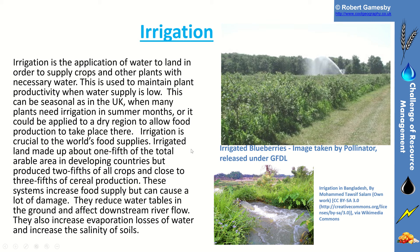Here's irrigation. You can see water being sprayed onto crops, and an irrigation channel in Bangladesh — flood irrigation. Irrigation is just the application of water to land in order to supply crops and other plants with the necessary water they need. It's used to maintain plant productivity and growth when water supply is low.